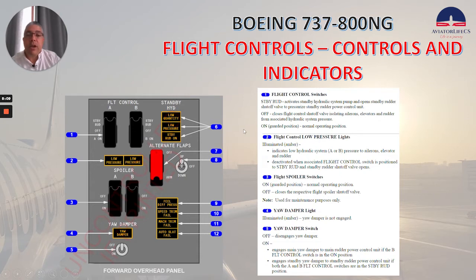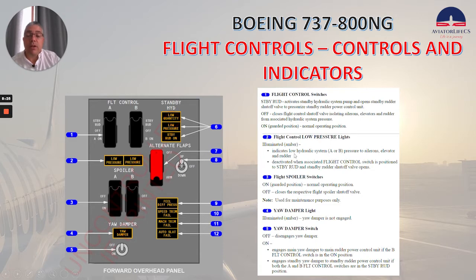On is the guarded position — that's the normal operating position. Number 2, we have the low pressure lights for the flight control. Illuminated amber indicates low hydraulic system A or B pressure to ailerons, elevator, and rudder. Activated when the associated flight control switch is positioned to standby rudder, and the standby rudder shutoff valve opens.